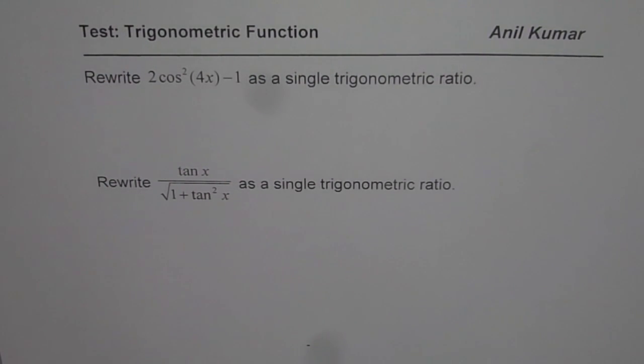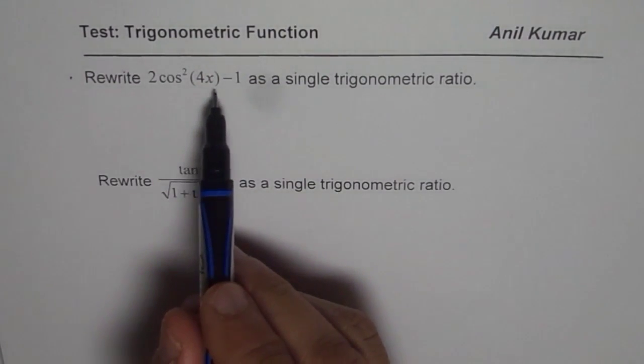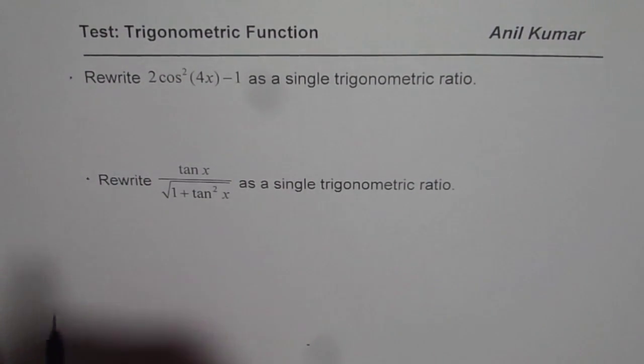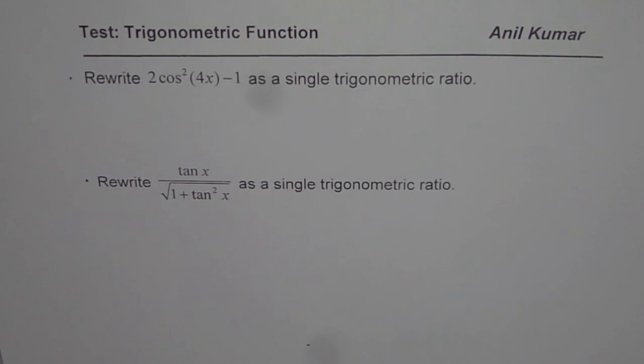We need to rewrite the first one: rewrite 2cos²(4x) - 1 as a single trigonometric ratio. The second one is: rewrite tan x divided by square root of 1 plus tan²x as a single trigonometric ratio. You can pause the video, answer the questions and then look into my suggestions.